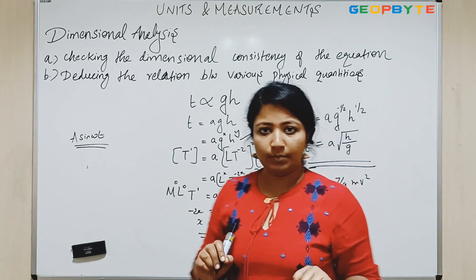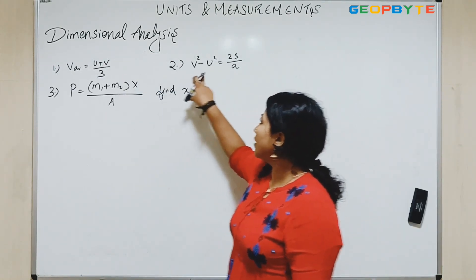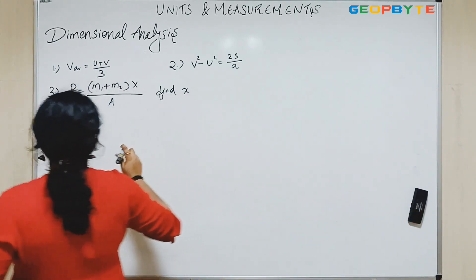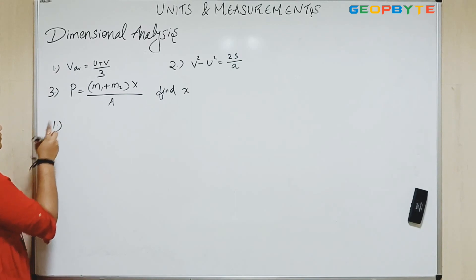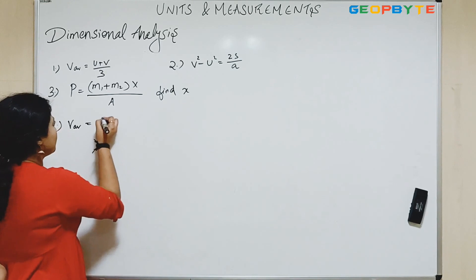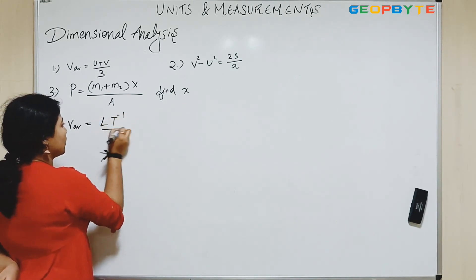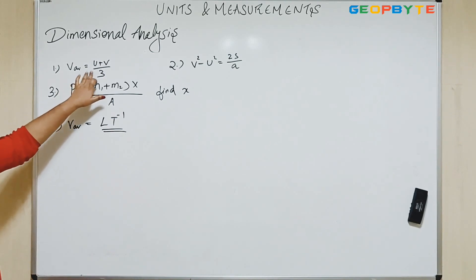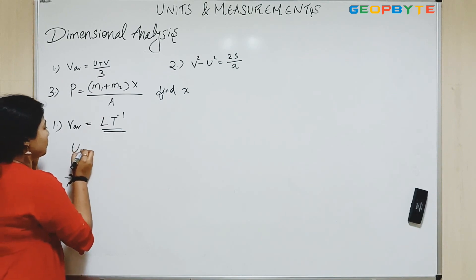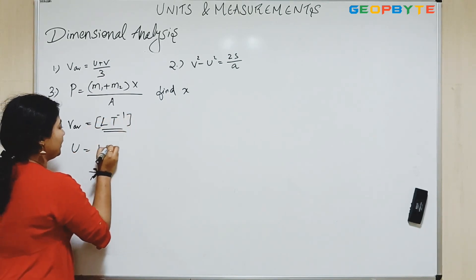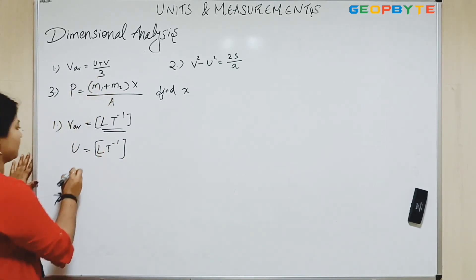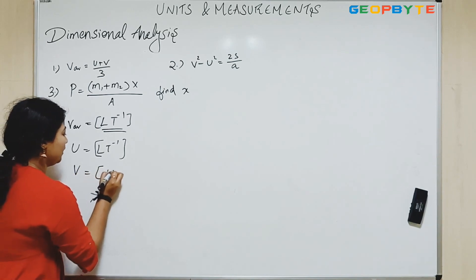Now we will do one problem. In the first problem, we have to check the dimensional consistency of the equation. Average velocity is distance by time, that is L T to the power minus 1. And what is U? U is the initial velocity, so U is L T to the power minus 1. V is the final velocity, V is also L T to the power minus 1.